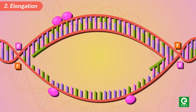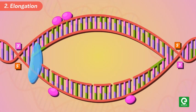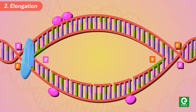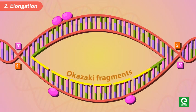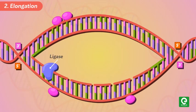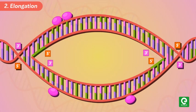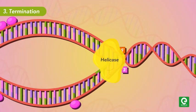Since DNA strands run in opposite directions, synthesis on one strand can occur continuously — this is known as the leading strand. On the opposite strand, DNA is synthesized discontinuously by generating small fragments called Okazaki fragments in the 5' to 3' direction, which are later joined by enzyme ligase. This strand is known as the lagging strand, as synthesis proceeds at a lower rate.